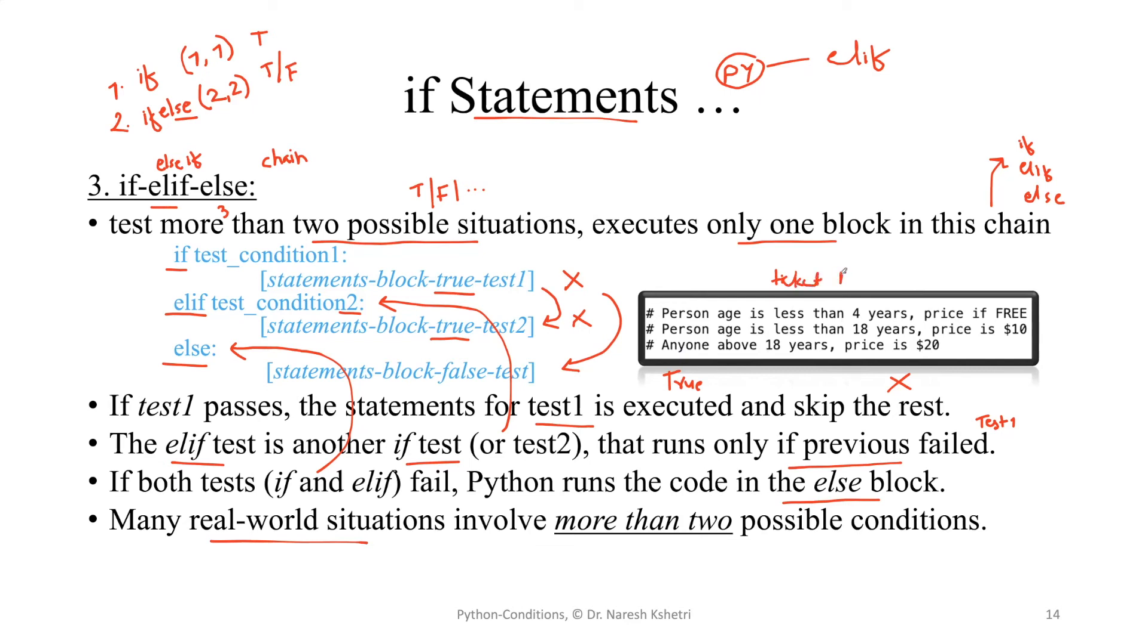So here is something we are trying for the ticket price of some park or zoo we can say. So here in the ticket pricing we are trying to check if a person is less than four years the price is free and if the person is less than 18 years the price is $10 and if anyone above 18 years the price is $20.